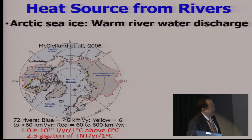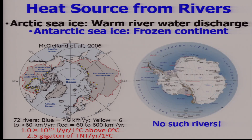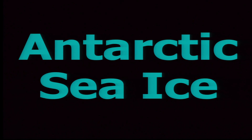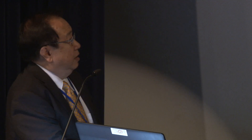In contrast, the Antarctic has no such rivers — it's basically a frozen continent. That is one of the stark contrasts between Arctic and Antarctic. Now let's take a look at the Antarctic sea ice, and the polar sea ice paradox showing stability or even slight increase in Antarctic sea ice.